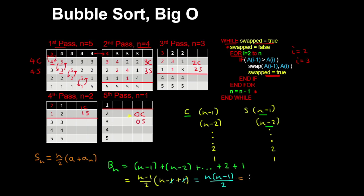If you expand this, we get n²/2 minus n/2, and given the fastest growing term, the algorithm has a time complexity of O(n²).